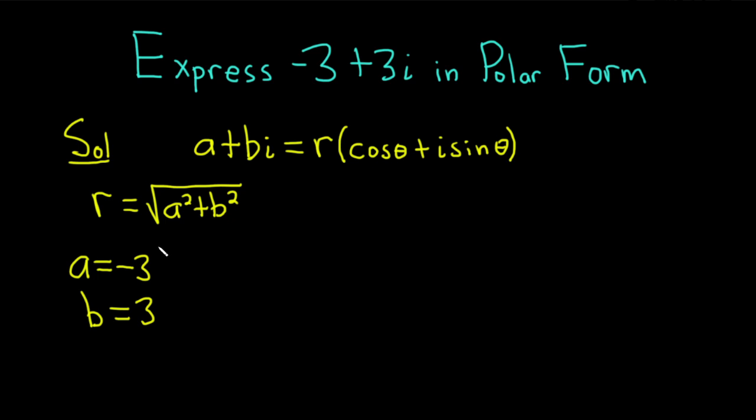And so now what you do is you just take these numbers, the a and the b, and you plug them into your formula for r. This is equal to the square root of, so a is negative 3, so it's negative 3 squared, plus, and then b is 3, so it's 3 squared.